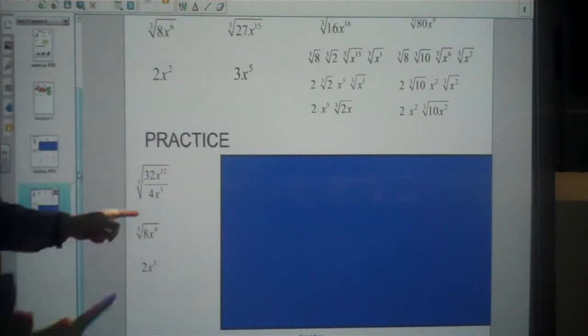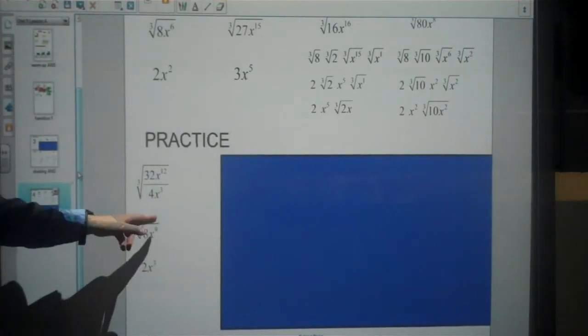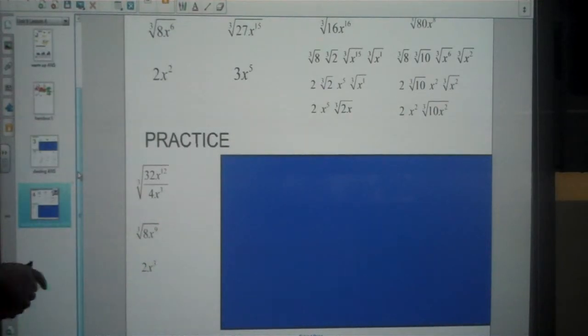x to the 12 divided by x to the 3, subtract the exponents, gives us 9. And then the cube root of 8 is 2. The cube root of x to the 9 is x to the 3, because 9 divided by 3 is 3.